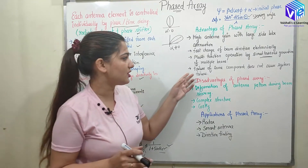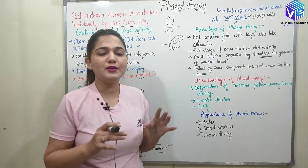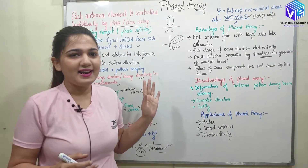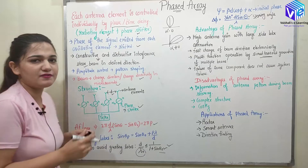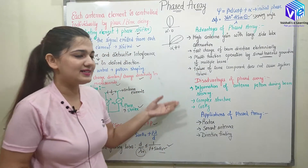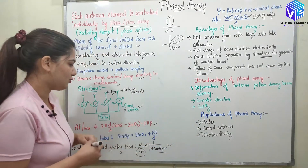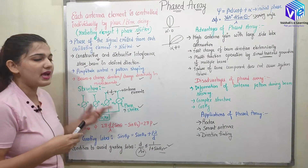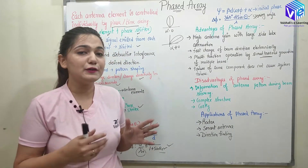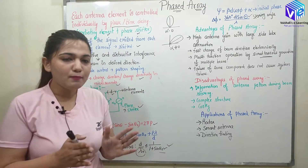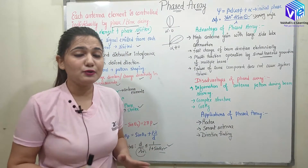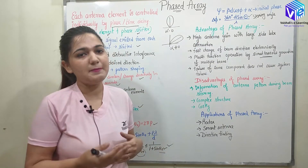All these outputs are dependent upon the phase — if I change the phase, the output beams change. Additionally, failure of some components does not cause overall system failure; if only one or two phase shifters are not working, we can compensate for them. Coming to the disadvantages: first, it is costly and has a complex structure — with each and every antenna element having one phase shifter, it is complex and expensive. We will also have deformation of the antenna pattern during beam steering, which can result in a degraded beam pattern at the output.